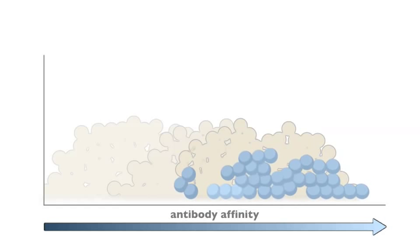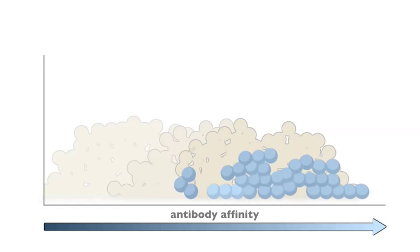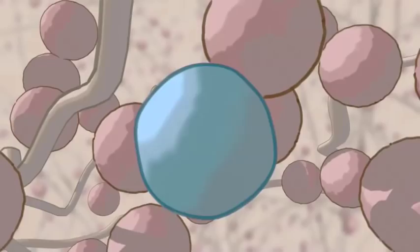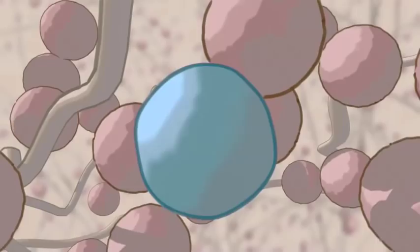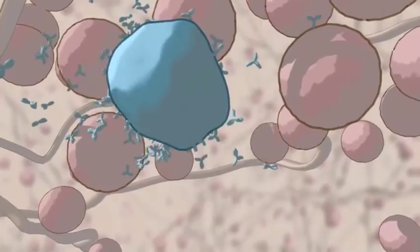A large population of high affinity centricytes is produced. The cells that have survived this competition can then differentiate into immune effector cells, like plasma cells, which produce massive amounts of these high affinity antibodies and play a key role in an efficient immune response.